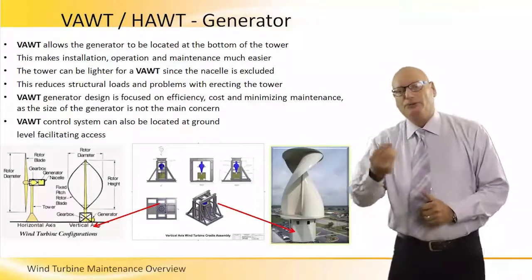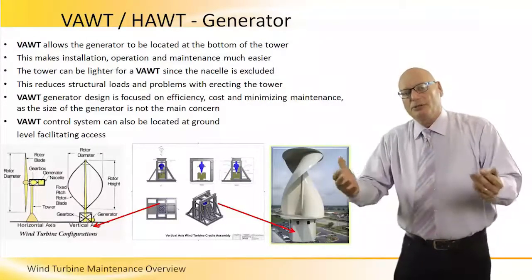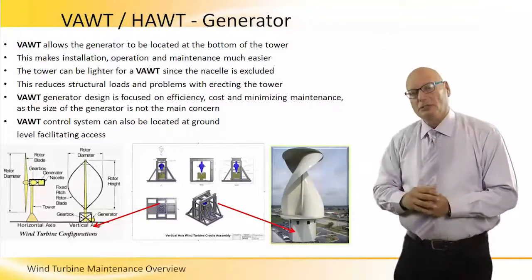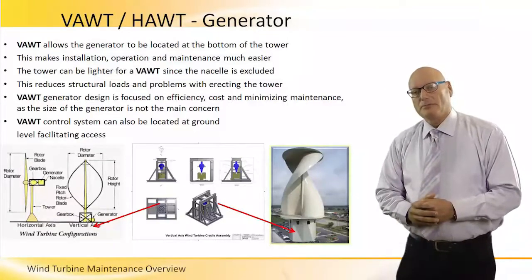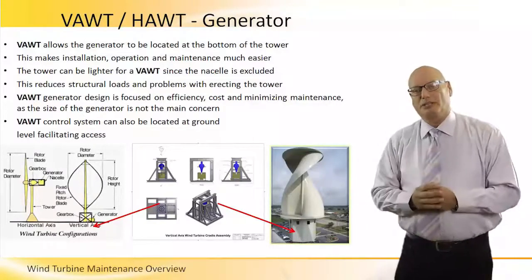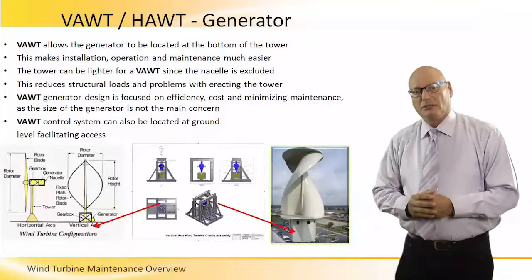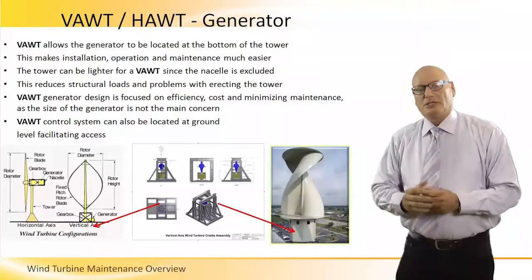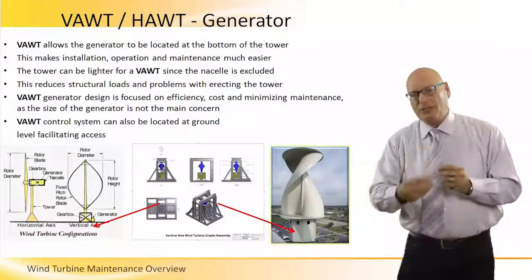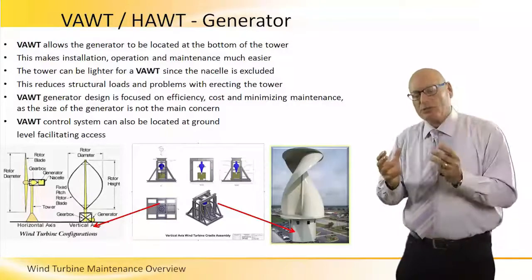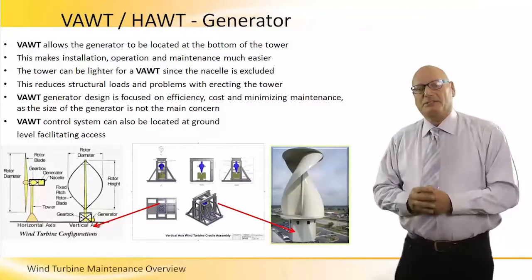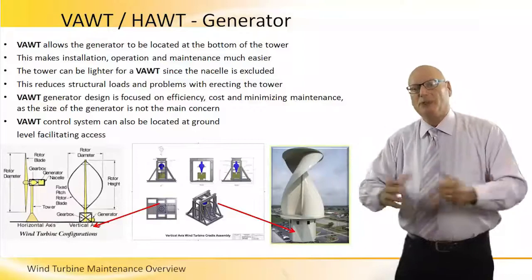The tower is lighter for a VAWT because there is no nacelle. There is a nacelle up there for the HAWT, but no nacelle at the bottom for the VAWT. This reduces structural loads and problems with erecting the tower. Taking the weight and size out of the equation for VAWTs enables us to concentrate on efficiency and minimizing maintenance. The size of the generator is no longer a limiting parameter.